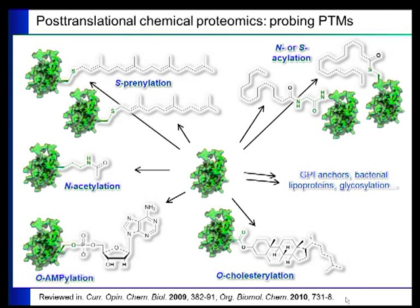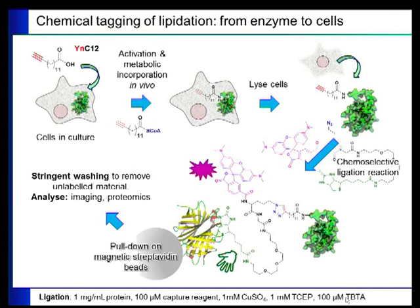The way this technology works — I've shown the example here for myristoylation, which is the transfer of a C14 fatty acid to certain target proteins. We take one of our analogues, in this case YNC12. This compound has a triple bond at one end of the molecule, shown in red, which just replaces the last single bond in myristic acid. Otherwise, it's very much the same sort of molecule.